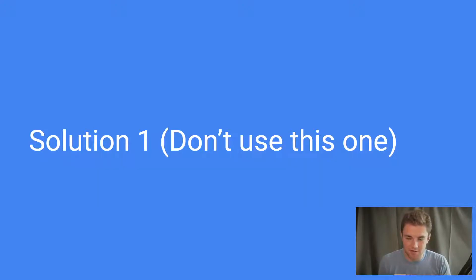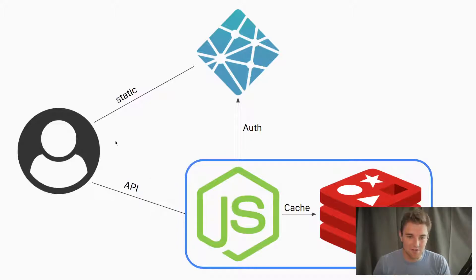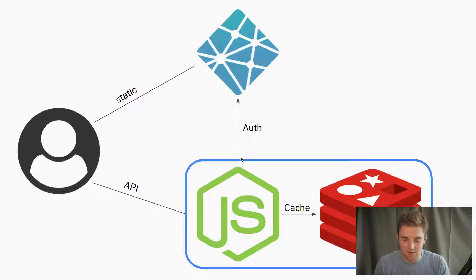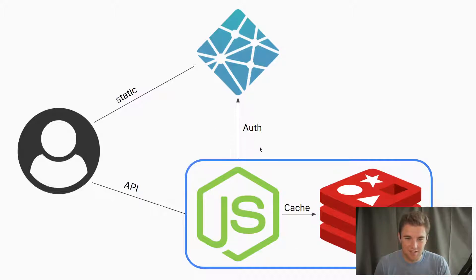The first solution I came up with, and the first one I tried, is definitely the worst solution. You have the user who makes their request to Netlify for their static content, and then there's an API and the API caches on the same machine. It doesn't have to be Node, but I'm familiar with Node, so I use that. The Node server will forward the JWT to Netlify, and you'll have a Netlify function which sends the user's roles back, and then you can use those roles to authenticate a request.